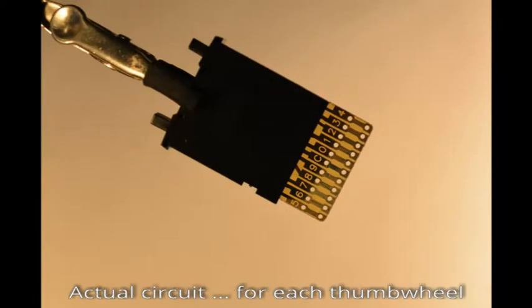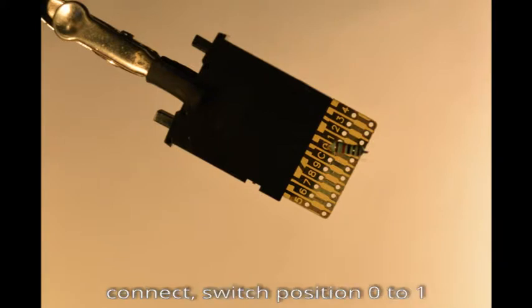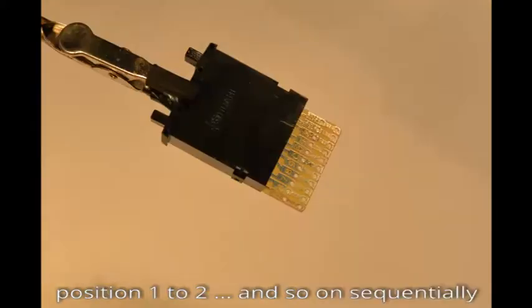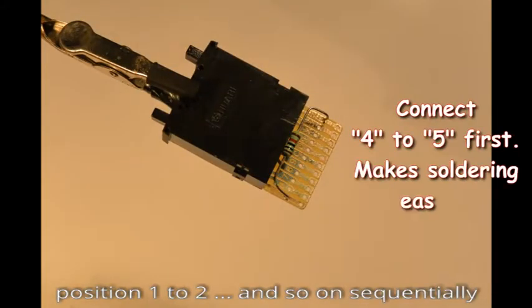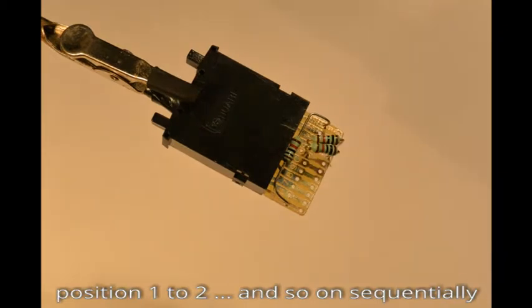For the actual circuitry, the idea is for each thumb wheel switch, take 9 of the same value resistor, 10 ohm for example, and then individually connect switch position 0 to 1 with a resistor, position 1 to 2 with another resistor, and so on sequentially. This produces a single decade.